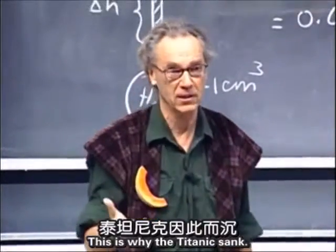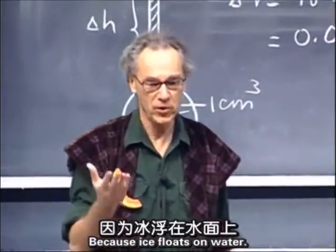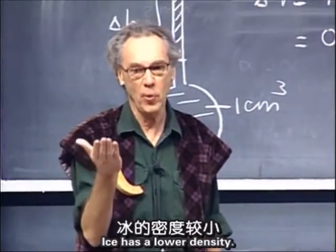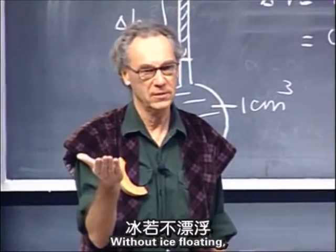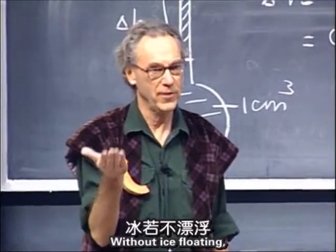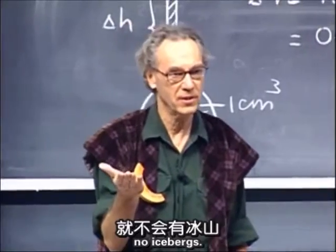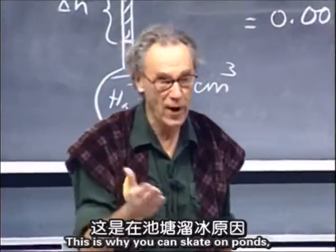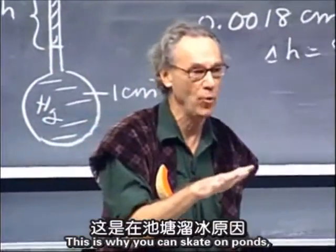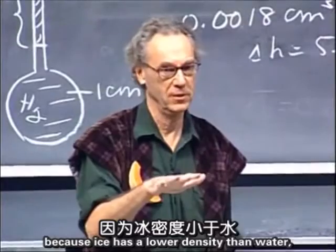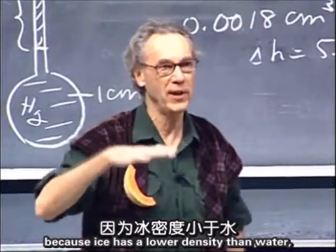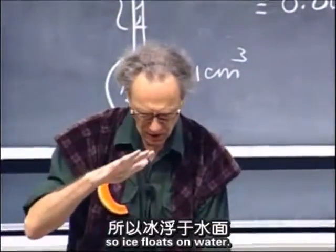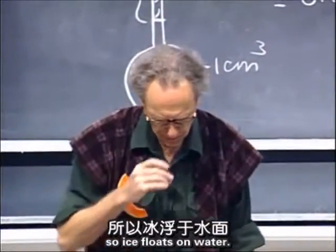This is why the Titanic sank, because ice floats on water — ice has a lower density. Without ice floating, no icebergs. This is why you can skate on ponds, because ice has a lower density than water, so ice floats on water.